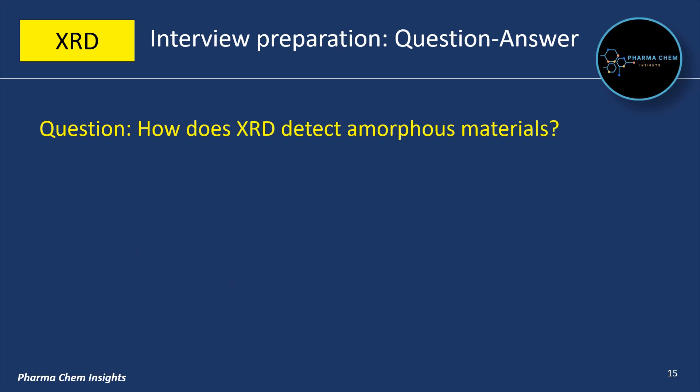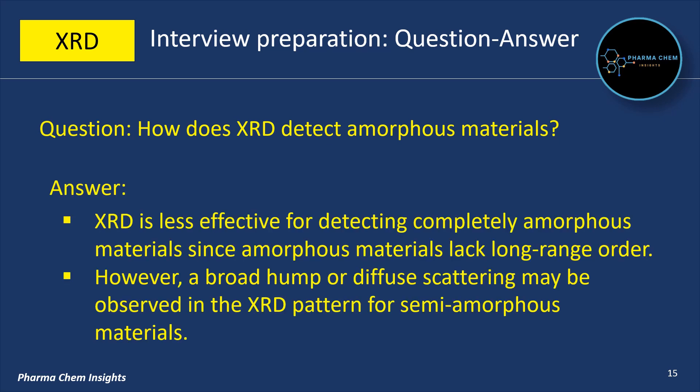Next question: how does XRD detect amorphous materials? XRD is less effective for detecting completely amorphous materials since amorphous materials lack long-range order. However, a broad hump or diffuse scattering may be observed in the XRD pattern for semi-amorphous materials.